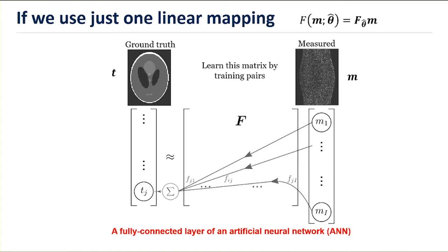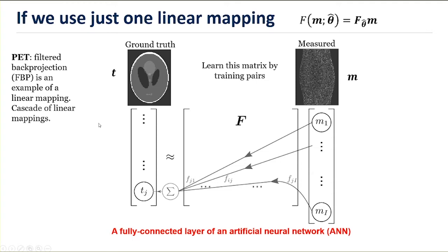Let's look at that linear mapping. In a simple 2D simulation, we want to find some inverse mapping F which can operate on values in the measured sinogram to deliver an estimate of the ground-truth radiotracer distribution. Is a linear mapping even feasible? Well, filtered back projection is an example — a cascade of linear mappings: take the measured data, Fourier transform it, apply a ramp filter, do an inverse Fourier transform, then back-project. That's a cascade of four linear mappings — you could even consider FBP as a deep network of linear operators.